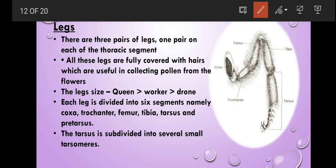There are three pairs of legs in honeybee which are situated on each thoracic segment. The legs are fully covered with hairs which are useful in collecting the pollen from the flowers. The leg size varies among queens, drones, and workers. The leg size of a queen is greater than worker and it is greater than drones. Each leg is divided into six segments namely coxa, trochanter, femur, tibia, tarsus, and pretarsus. The tarsus is subdivided into several small tarsomeres.